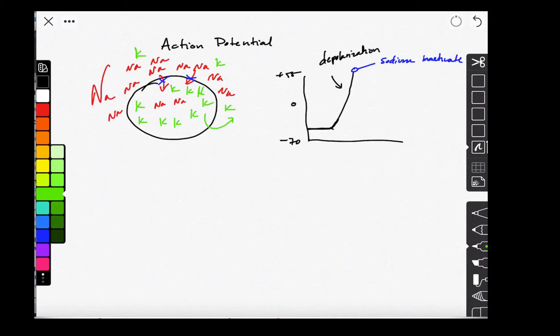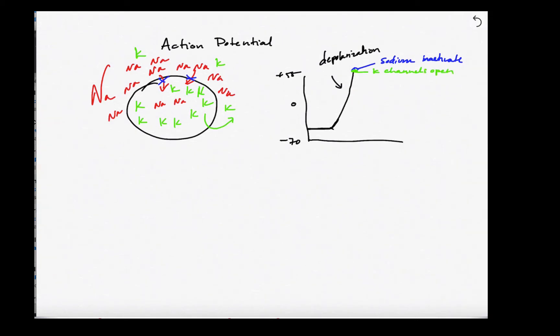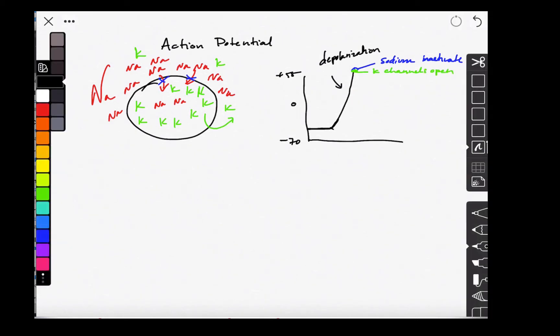It cannot do that until its channels open. Once its channels open, which happens right about here, positive ions start leaving the neuron. And that makes it become more negative, because now again, it has fewer positives inside than negatives.